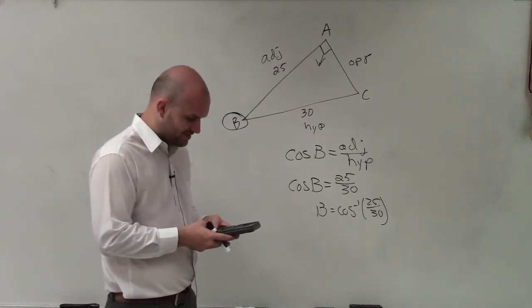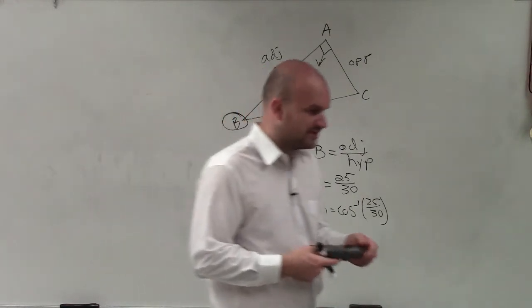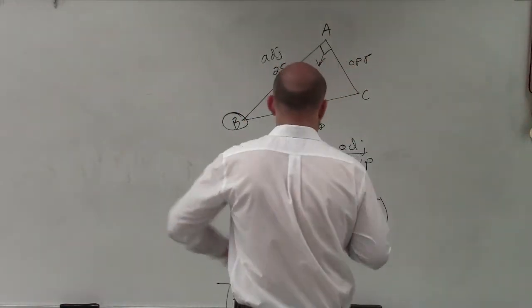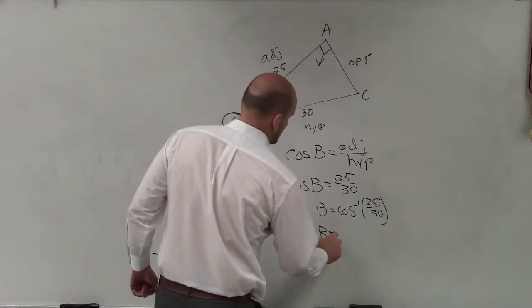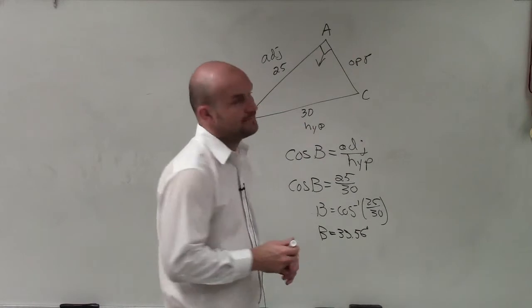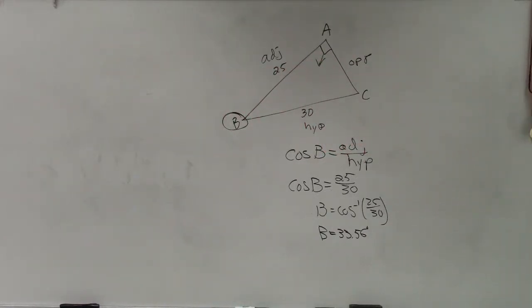So now, I just take inverse cosine, parenthesis, 25 divided by 30, and that gives me 33.56 when rounded to the tenth. OK. I've got an idea. Good.